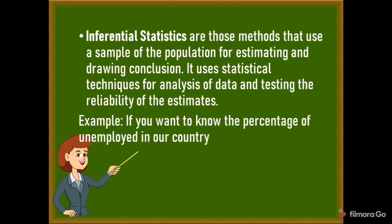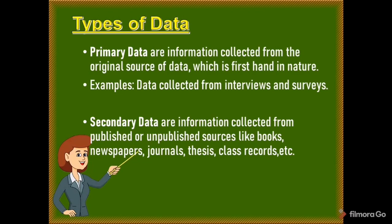Let's proceed to the types of data. The first is primary data — information collected from the original source, which is first-hand in nature. Examples are data collected from interviews and surveys. The second type is secondary data — information collected from published or unpublished sources like books, newspapers, journals, theses, class records, and others.